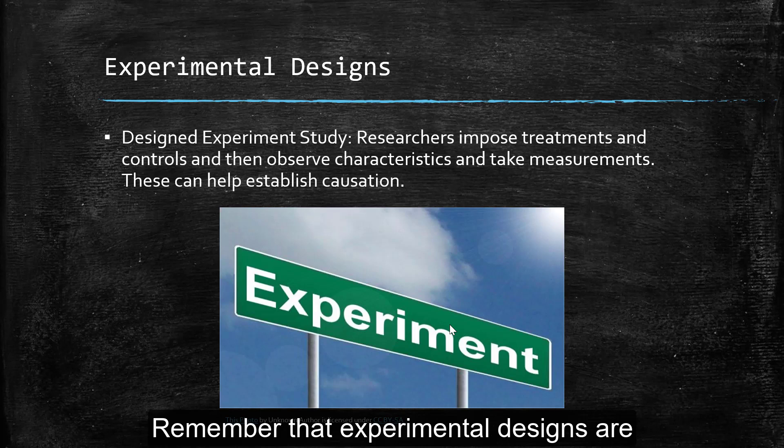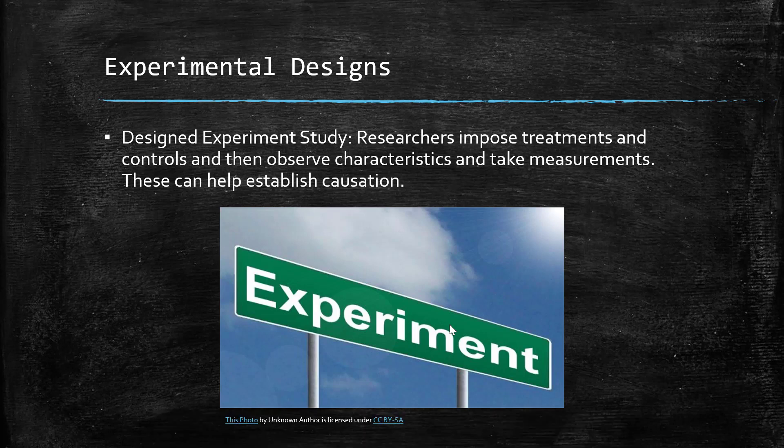For experimental designs, this is where we impose treatments and controls and observe characteristics and take measurements. So again, we're establishing causation.